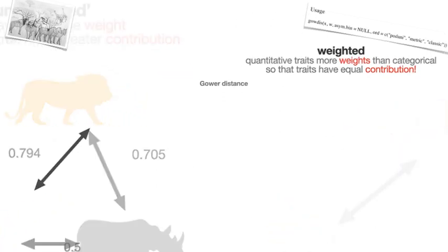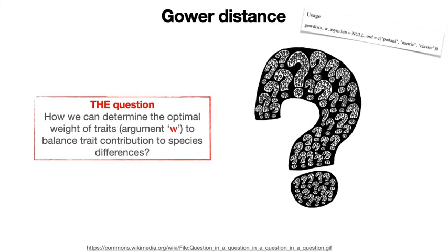And now comes the question: how can we find the ideal weight for each trait to balance their contributions in the multi-trait dissimilarity? In other words, which values should we give to the argument w so that all traits contribute equally? This is actually not a very simple question, because the combination of values could be virtually infinite. How can we choose these values then?